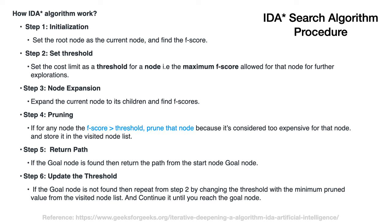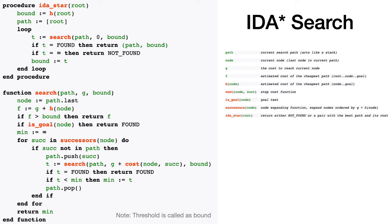The overall summary of the algorithm highlights step 4 as the critical step: if F(n) values are greater than the current threshold, prune those nodes. Then take the lowest F(n) value among the pruned nodes and use it as the threshold for the next iteration.